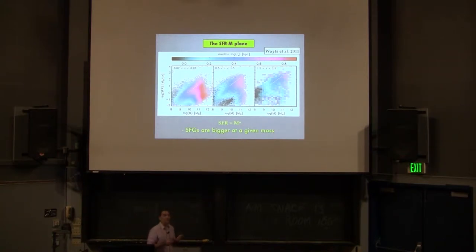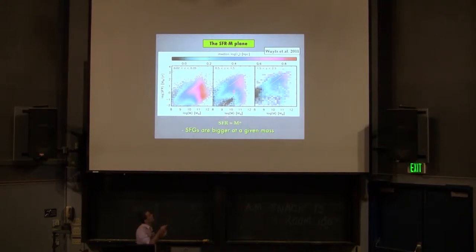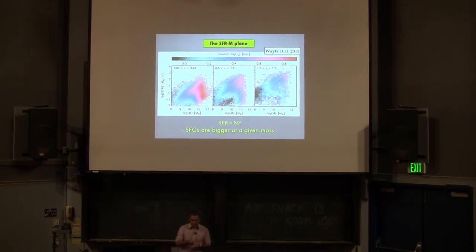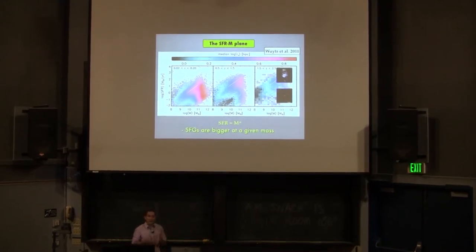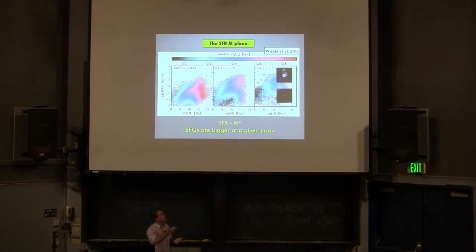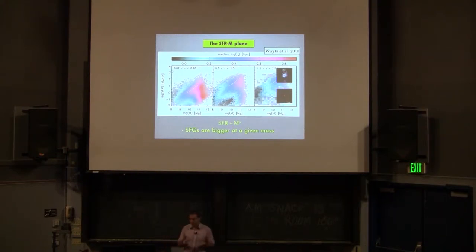What you can see color-coded in this diagram is the size of the galaxies. For any given mass, quiescent galaxies are always smaller than star-forming analogs of the same mass. In other words, star-forming galaxies are larger, while quiescent galaxies are smaller and compact. So in order to form a quiescent galaxy, it is not just a matter of quenching — stopping star formation — there must be something else going on that changes the structure of the galaxy.